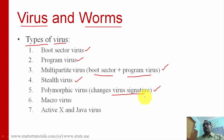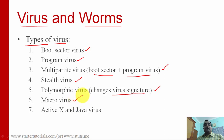A virus signature is a collection of characteristics that identify a particular virus — for example, the folder or path where it installs itself, or the type of files it infects, such as exe files. A polymorphic virus changes its signature to evade detection. The next type is a macro virus.